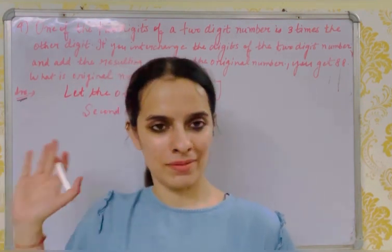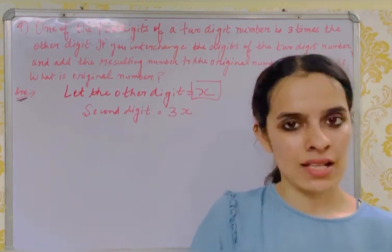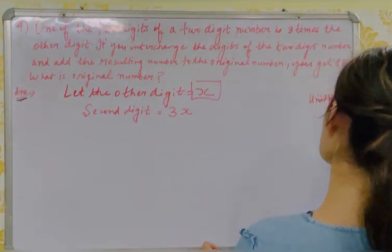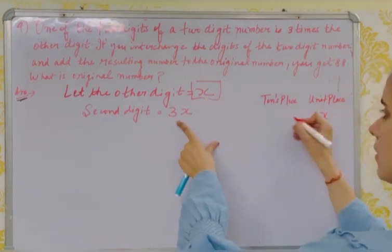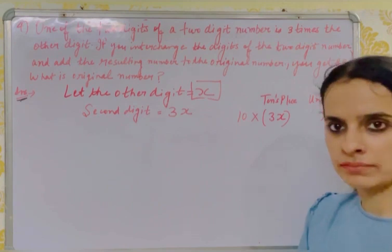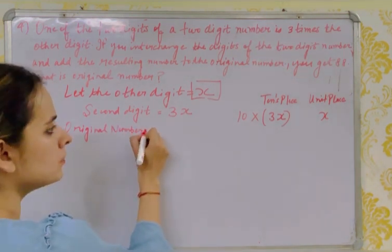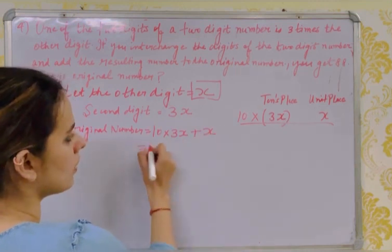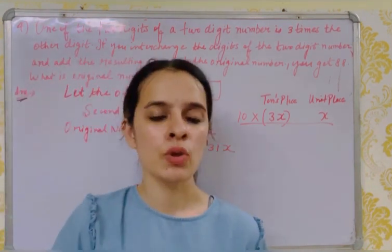As this question also involves interchanging, we apply the same unit and tens place method. Fix x at the units place and 3x at the tens place. Multiply 3x by 10 since it is at the tens place. The original number = 10(3x) + x = 30x + x = 31x.